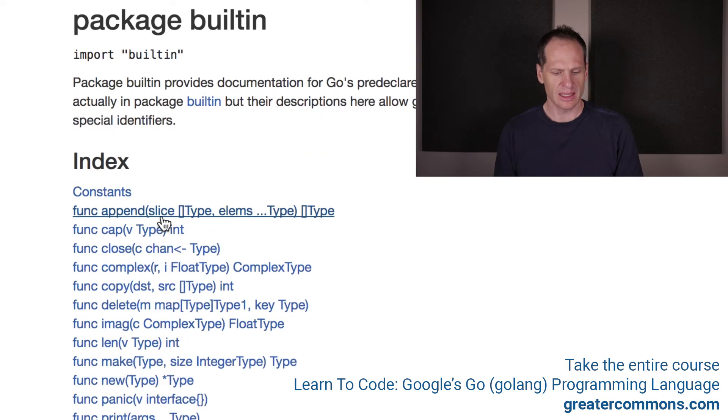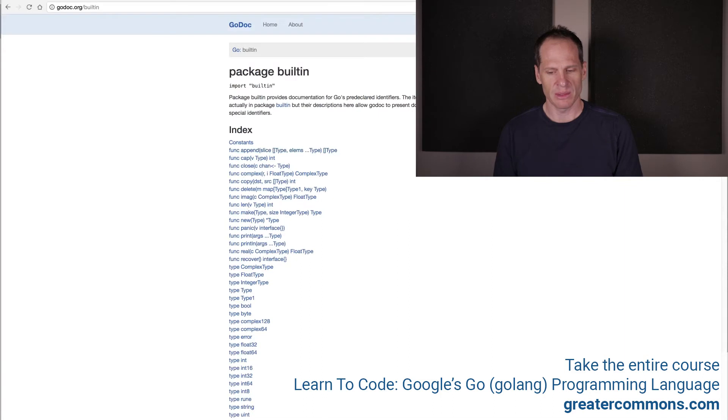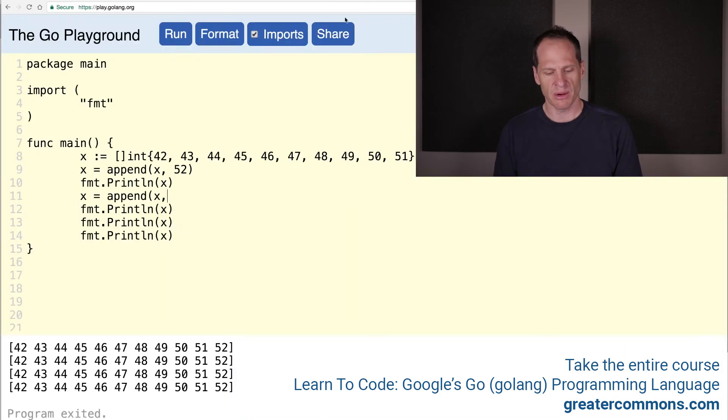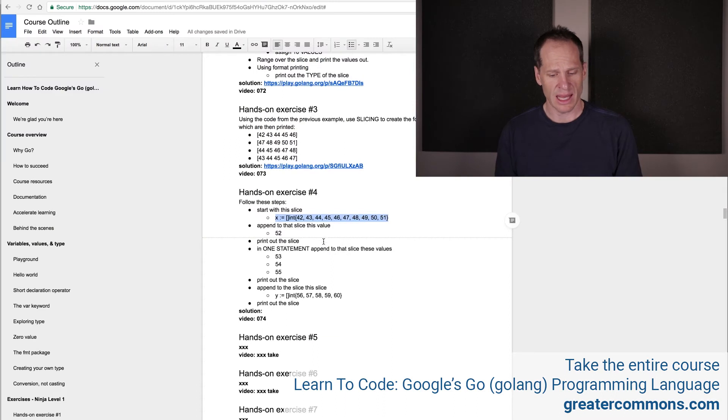And if we look at the index here, we see that append takes a slice of some type, right? Slice of some type. And you can append a variadic number of elements of that type. And it returns a slice of that type, right? So a variadic number of elements of that type means an unlimited number of elements. So we could do one of that element, or we could do 53, 54, 55. Unlimited number of elements of that type.